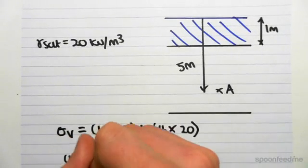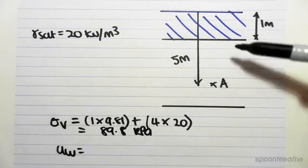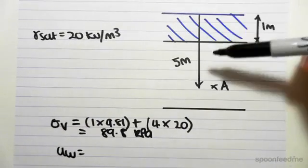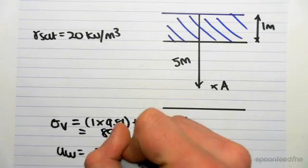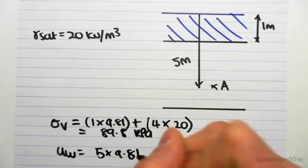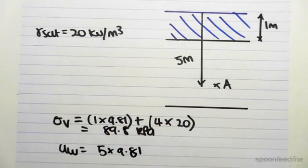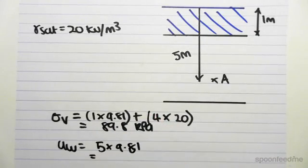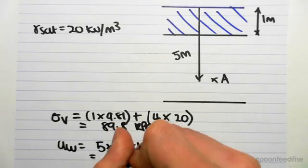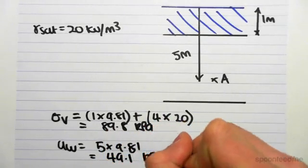Now the pore water pressure is actually the full depth, so it's going to be 5 meters times gamma w. It's 5 times 9.81, so we get 49.1 kPa.